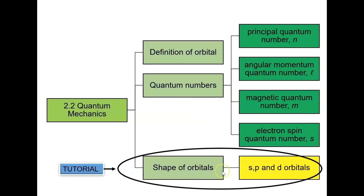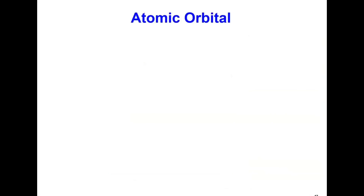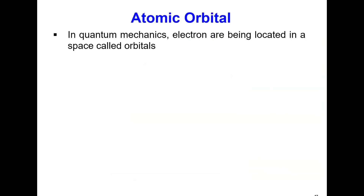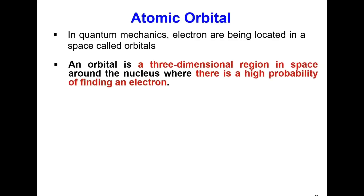In this subtopic, we will focus on the definition of orbital and the four quantum numbers. You will learn more about the shape of orbitals in your tutorial class. In quantum mechanics, electrons are located in a space called orbitals. An orbital is a three-dimensional region in space around the nucleus where there is a high probability of finding an electron.